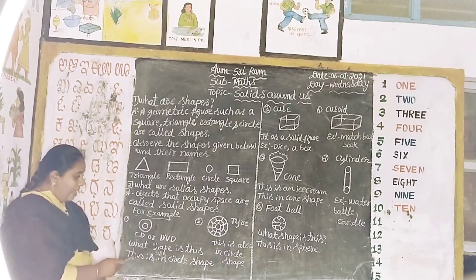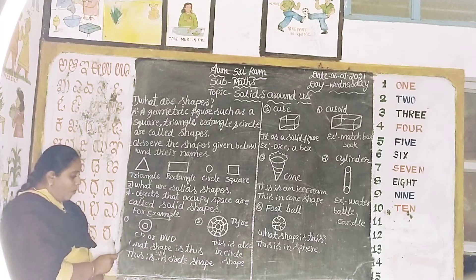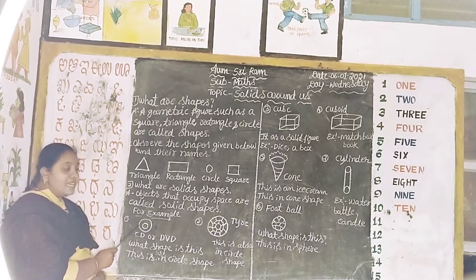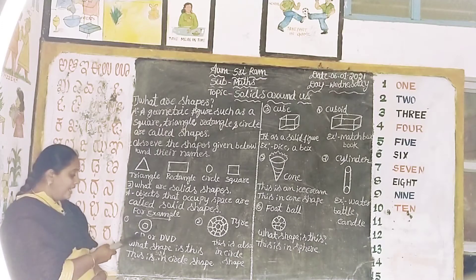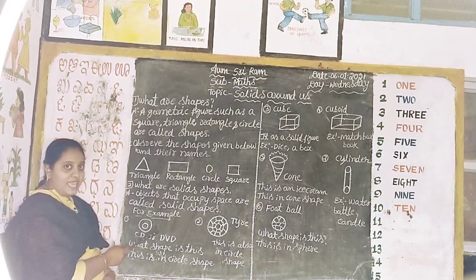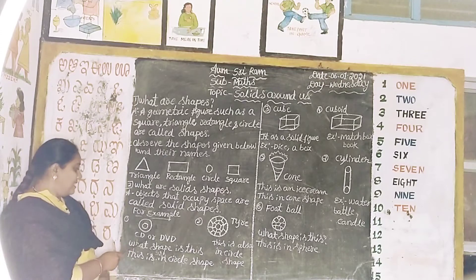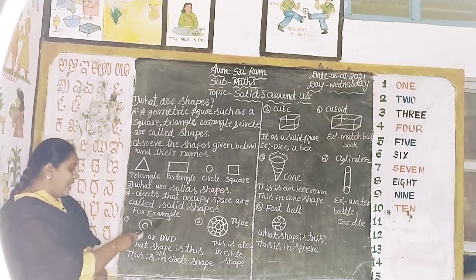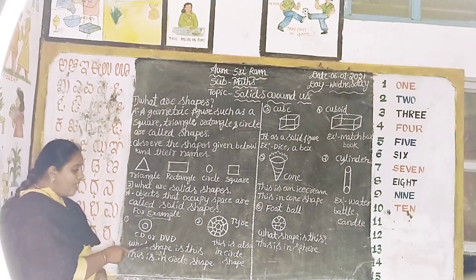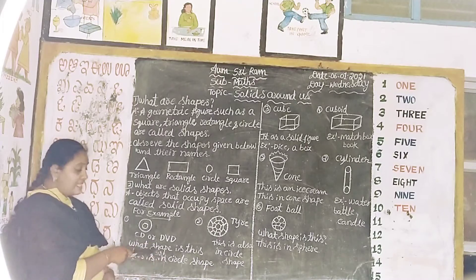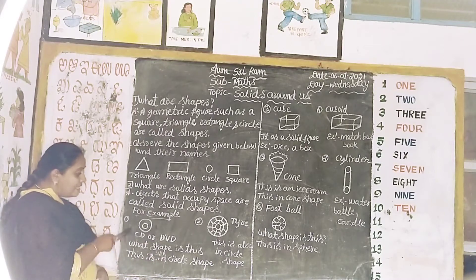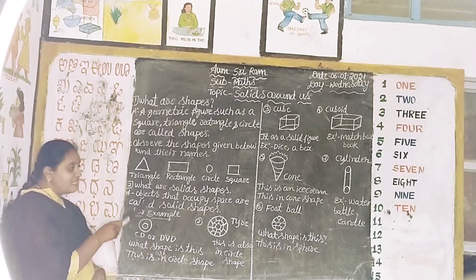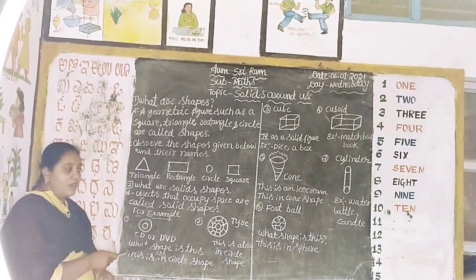What is this? This is a CD. What shape is this? This is a circle shape. What shape is this? This is a circle shape.